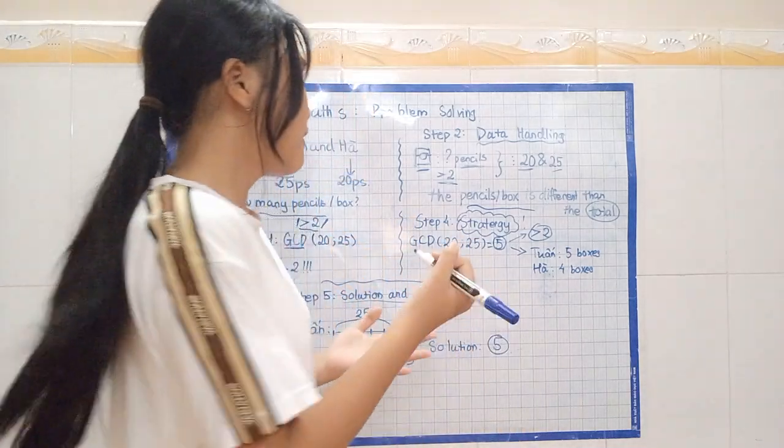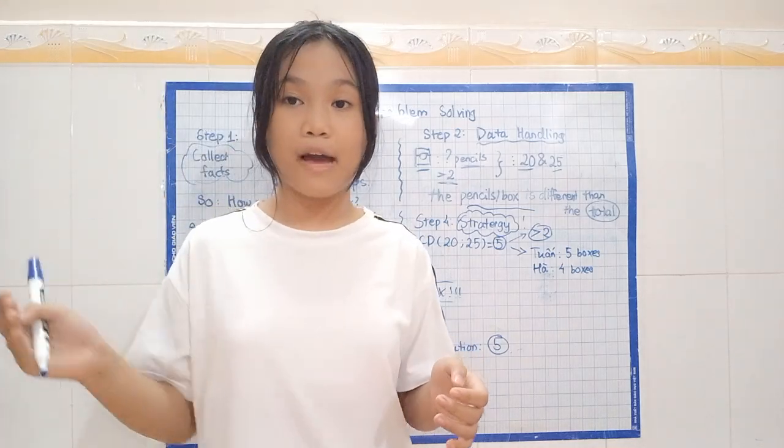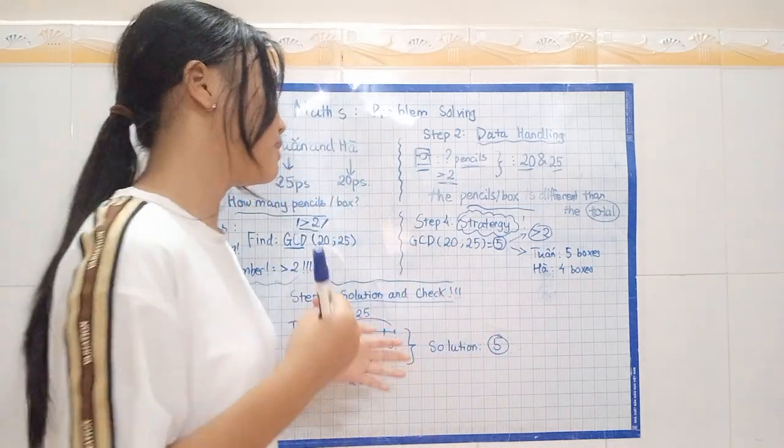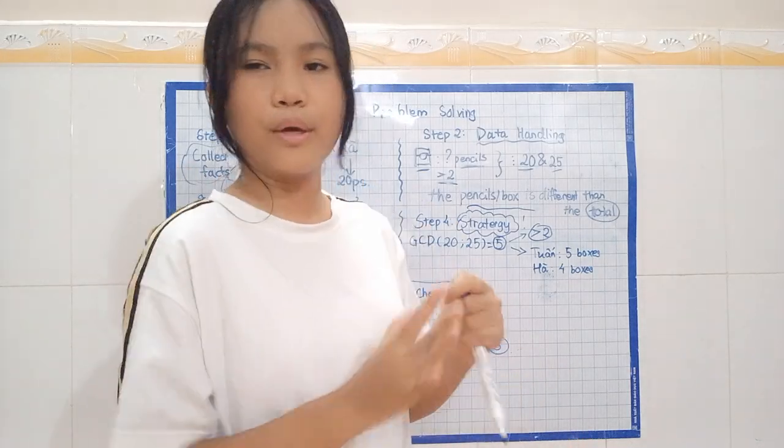Also, 20 and 25 are both divided by 5. So I got the answer, it is 5. Now, if you try to calculate it, 20 is able to be divided evenly by 5. And so do 25. And so, now, let's look through our solution.